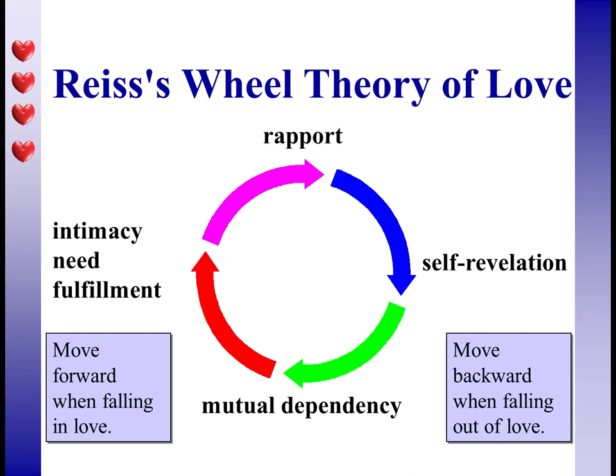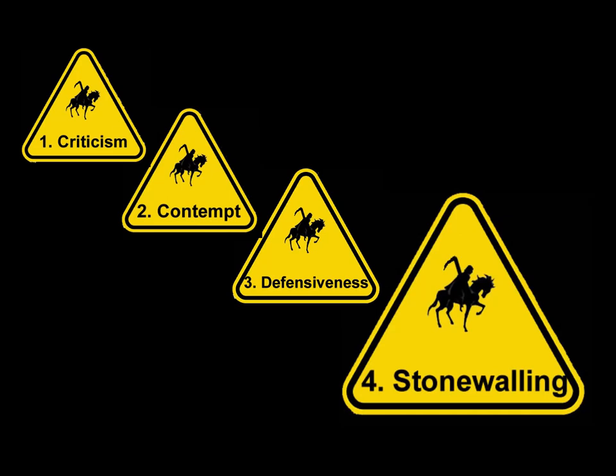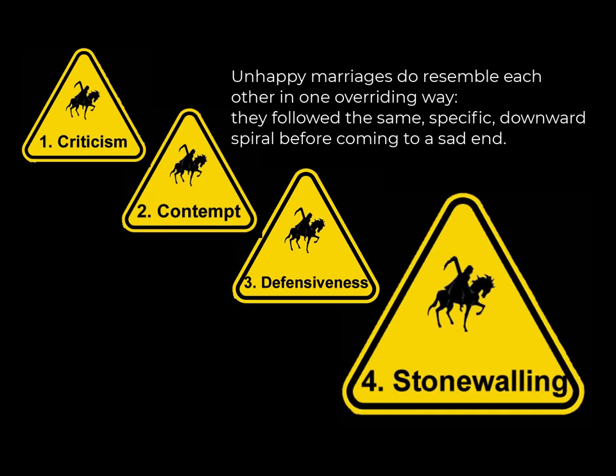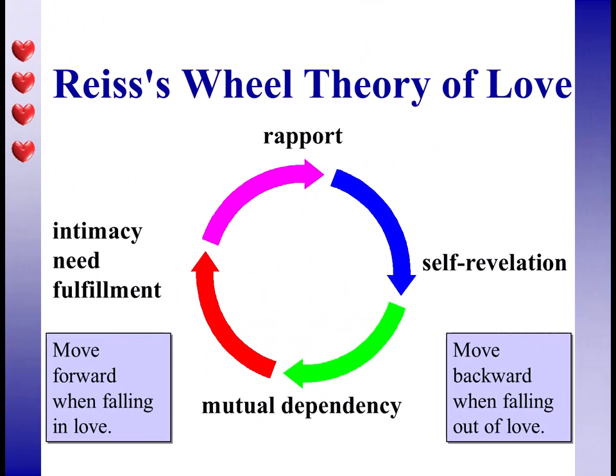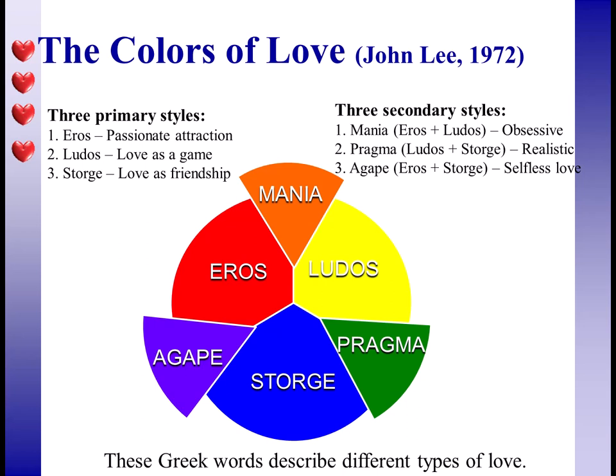When people fall out of love, according to this theory, they first stop using the other person for their intimacy need fulfillment, then they stop depending on that person, then they close off. When we talk about communication we'll discuss stonewalling, which is one of the four horsemen of the apocalypse — when couples have a relationship spiraling toward divorce. It's one of the latter stages: you're no longer revealing but holding back, clamming up, not communicating, and eventually rapport is gone.